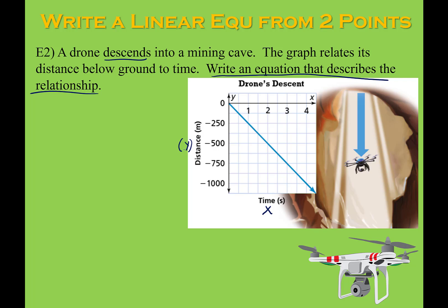I need to pay attention to my scale. Two blocks on the x-axis equals 1, and when moving in the y direction, two blocks corresponds to moving down to negative 250, so one block would be negative 125. To make things easier, I'll use the good dots on the diagonals. Moving down two blocks and to the right two blocks: moving right two blocks is a change of 1, and moving down two blocks is 250, and it's down so it's negative. So my slope, delta y over delta x, is negative 250 over 1, which is just negative 250.